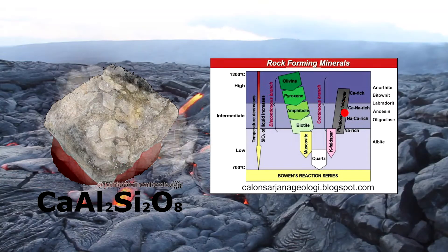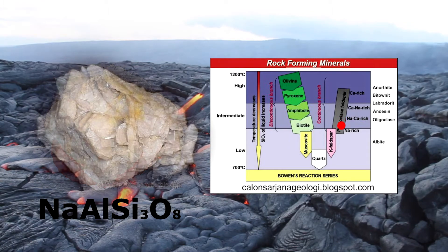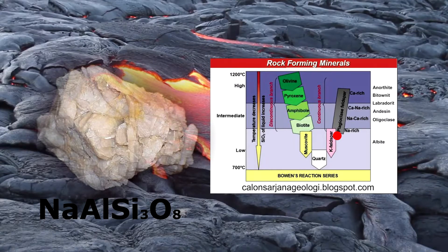Provided there is enough sodium in the surrounding magma, it takes the place of the calcium in the mineral's lattice until it is overall sodium-rich, from anorthite to albite.